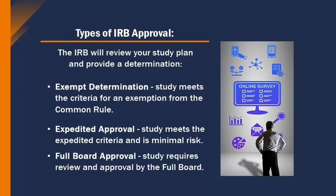When you submit to the IRB, there are a few different types of possible approvals or determination outcomes for your study. The IRB may find that the human subject research project qualifies for an exempt determination, meaning the study is human subject research but exempt from the federal regulation requirements under the Common Rule. If the study does not meet the criteria for an exempt determination, it may qualify for expedited approval, which requires meeting the expedited criteria and being minimal risk. If the study does not meet the expedited criteria, or if there is the possibility it is more than minimal risk, then the study will require review and approval by the IRB full board.